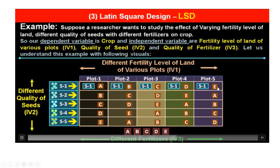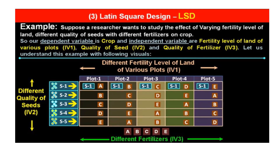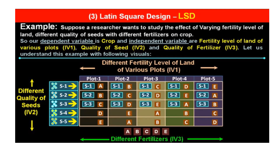After applying the fertilizers to increase soil fertility in different plots, the seeds are sown. We have plots 1, 2, 3, 4, and 5, and seed 1 is used in every plot. Similarly, seed 2 is placed in every plot, followed by seed 3, seed 4, and seed 5.